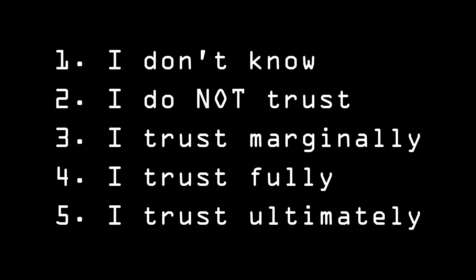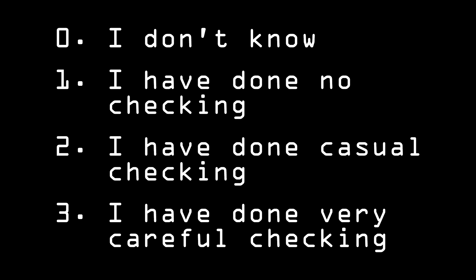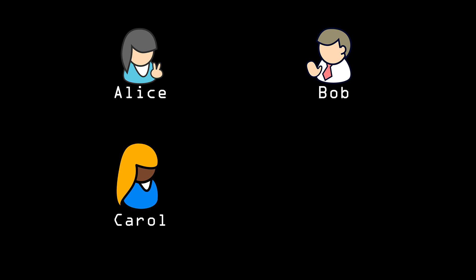Bob and Alice each trust their own keys ultimately, because it's their key after all. But they shouldn't do that with any other key. What they should do is an indirect trust, which happens when they sign the key. So Bob signs Alice's key, and he can give it one of four trust values: 0. I don't know. 1. I have done no checking. 2. I have done casual checking. 3. I have done very careful checking. Since they actually got together, exchanged keys, and verified them, Bob can sign Alice's key at level 3. Let's bring in a third person, Carol. Carol has also exchanged keys with Bob. Although she hasn't directly exchanged keys with Alice, Bob has, and Carol trusts Bob enough to trust his evaluation of Alice's key. So she doesn't need to go over the whole thing again with Alice. As long as she trusts Bob enough to make sure Alice can be trusted, she can trust Alice too.